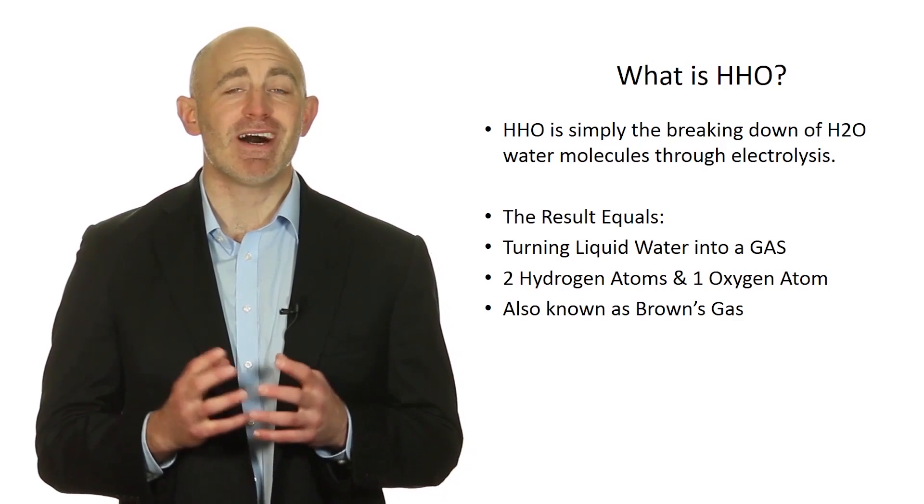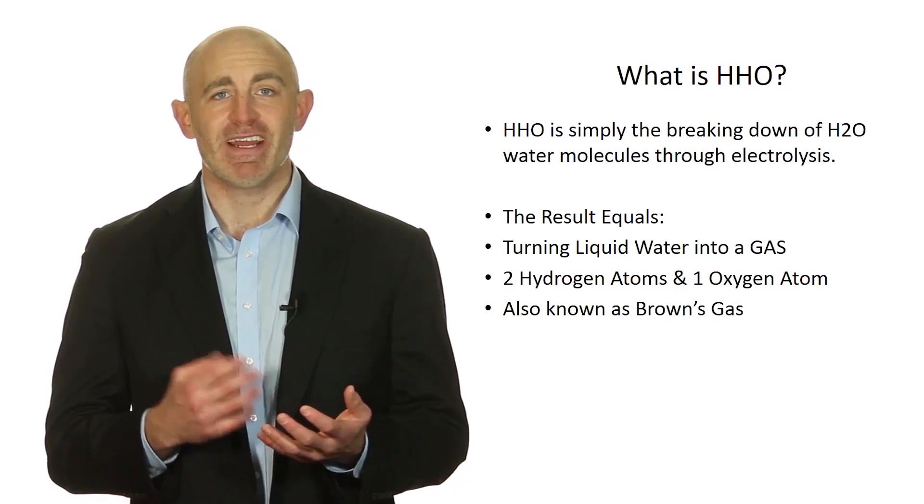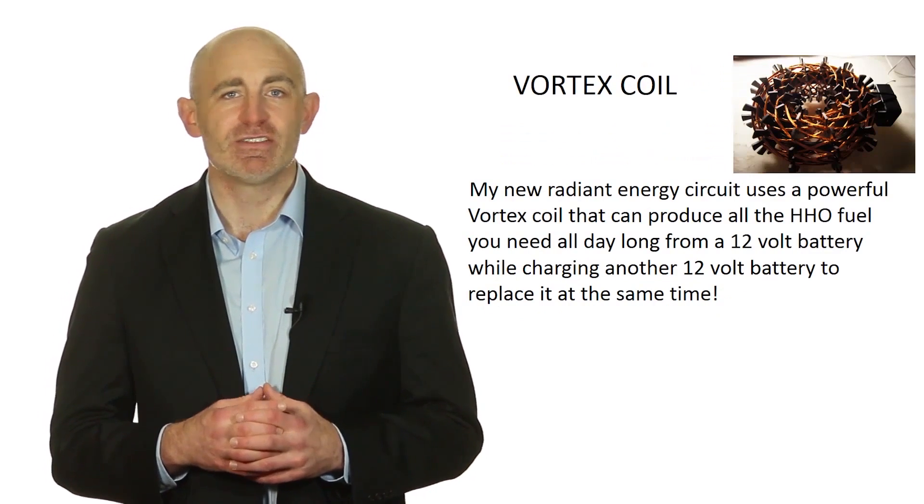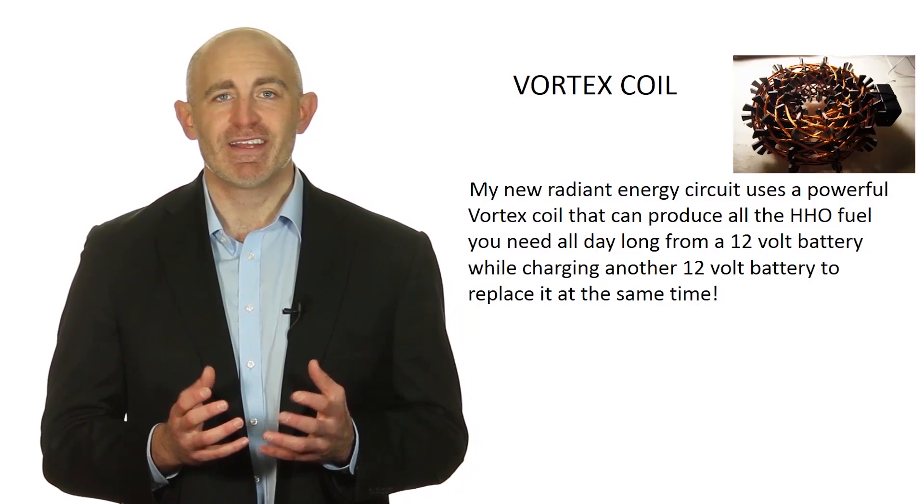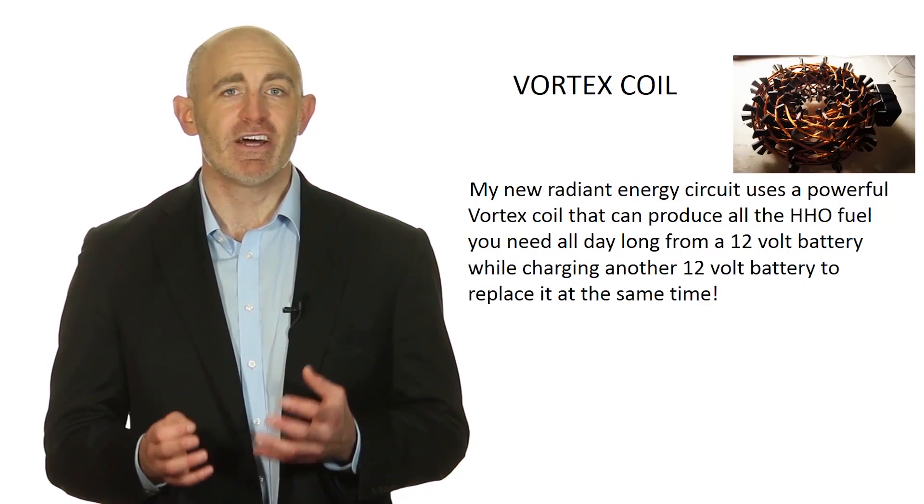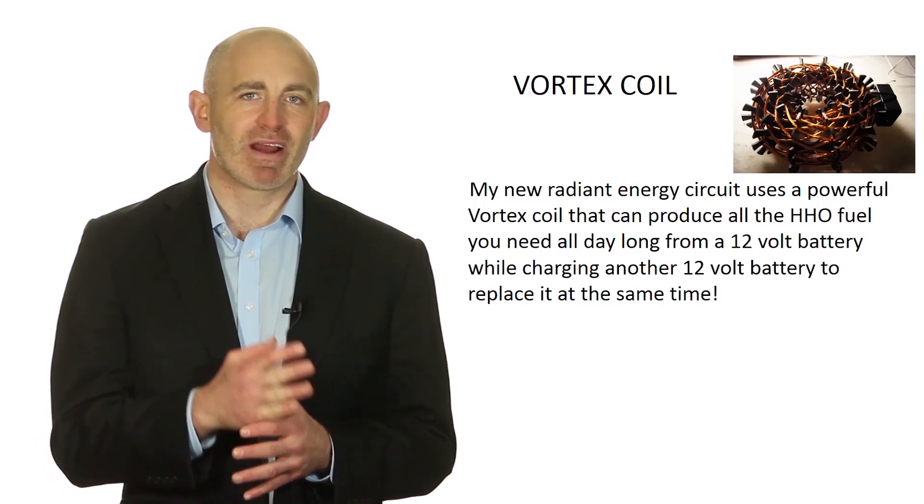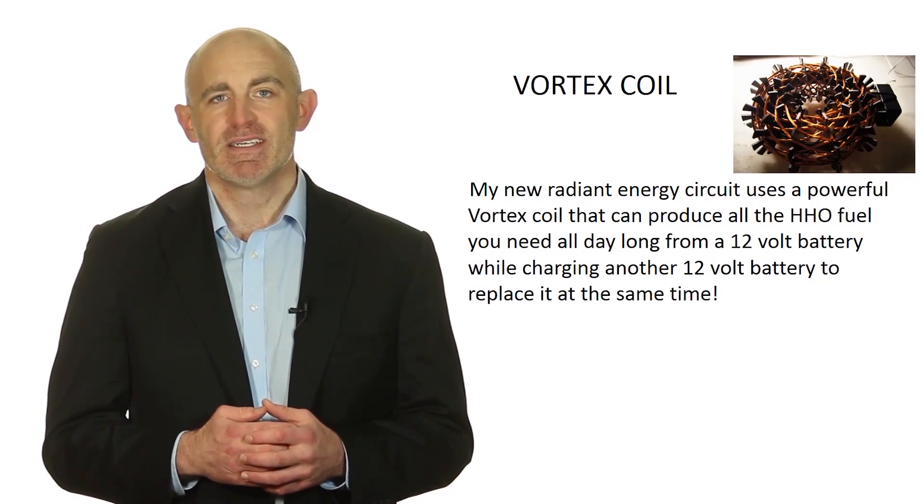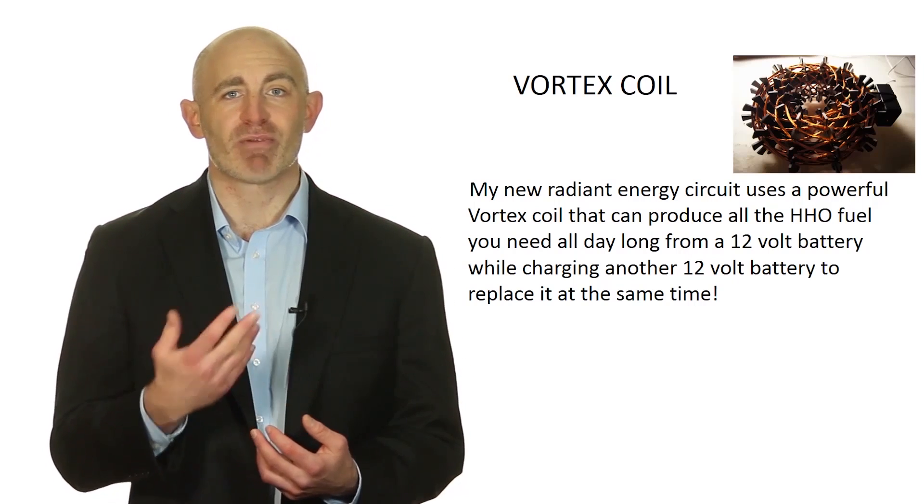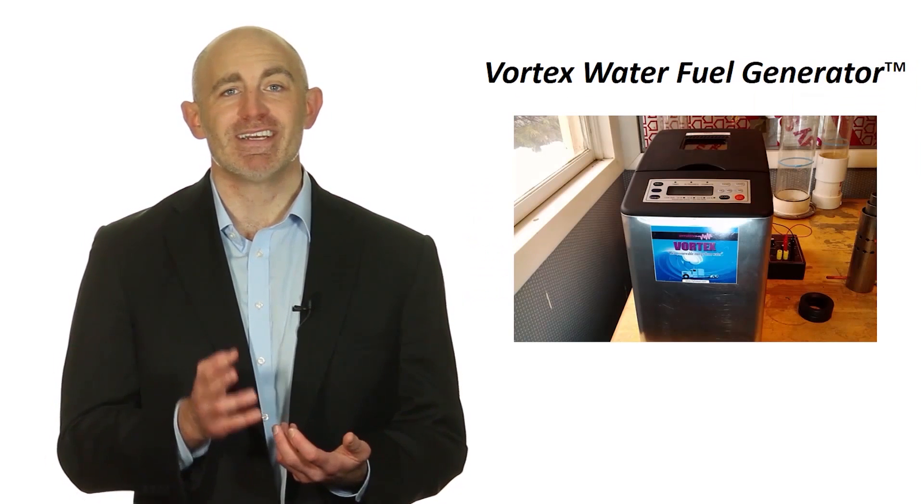Stanley Meyer's circuits tap into an unlimited source of energy like sunlight, but that is always present both day and night called radiant energy or zero point energy. My new radiant energy circuit uses a special vortex coil that can produce all the fuel you'll need all day long from a 12 volt battery, while charging another 12 volt battery to replace it at the same time. While one battery is generating Brown's gas, the other battery is getting charged up. The batteries automatically switch when one battery is discharged so that, if needed, you could run your Brown's gas generator system 24-7 just on water. That, my friend, is free energy.